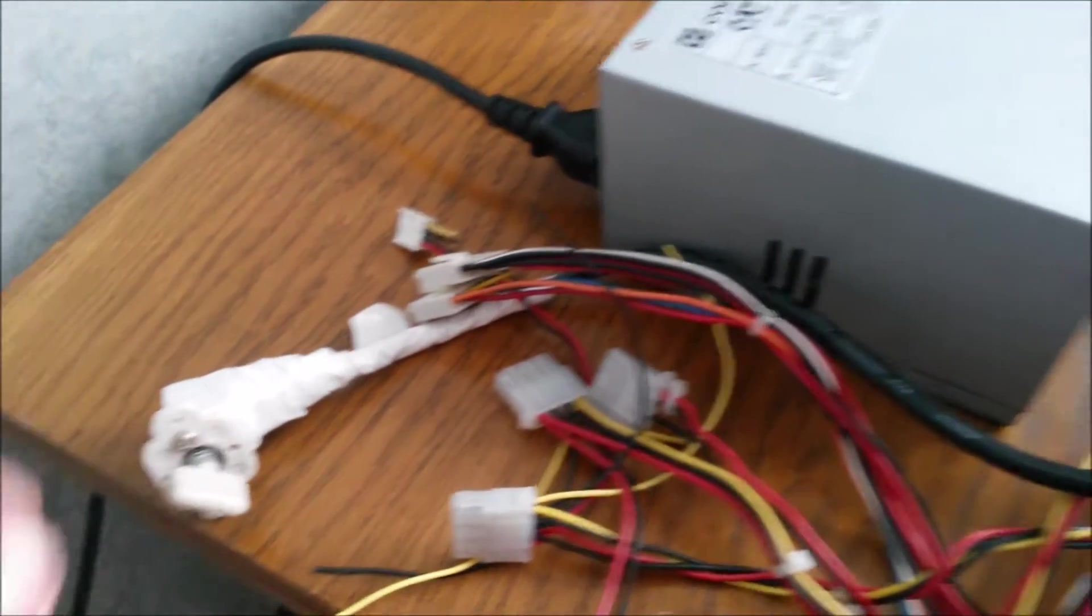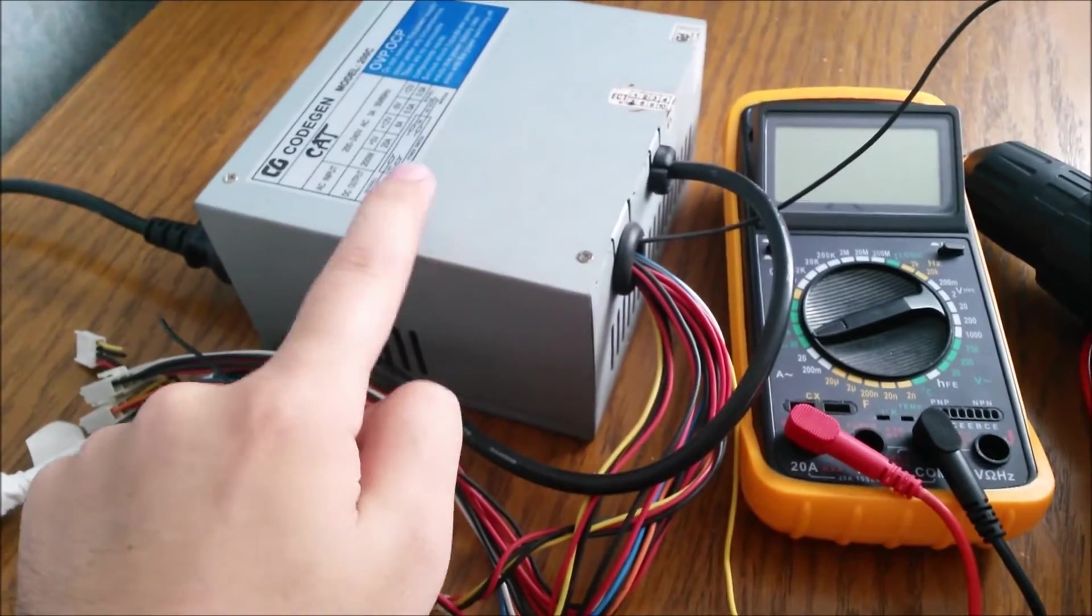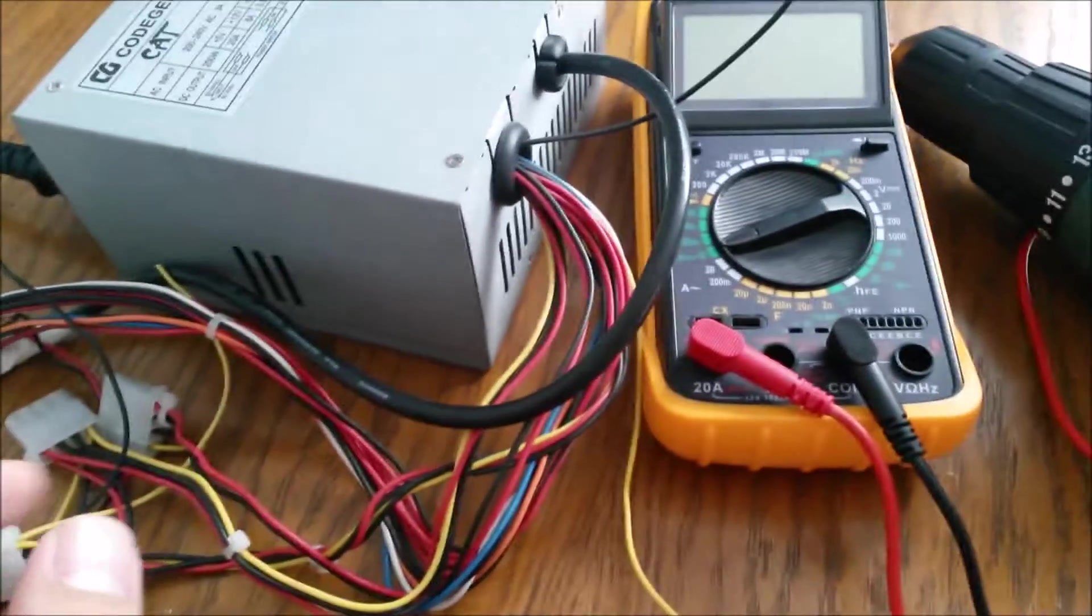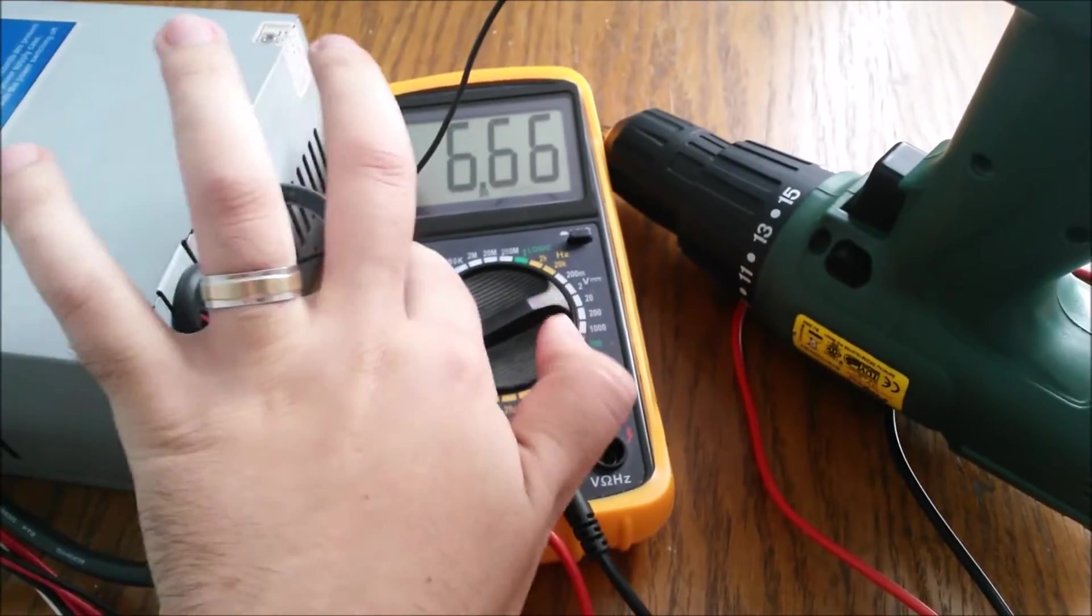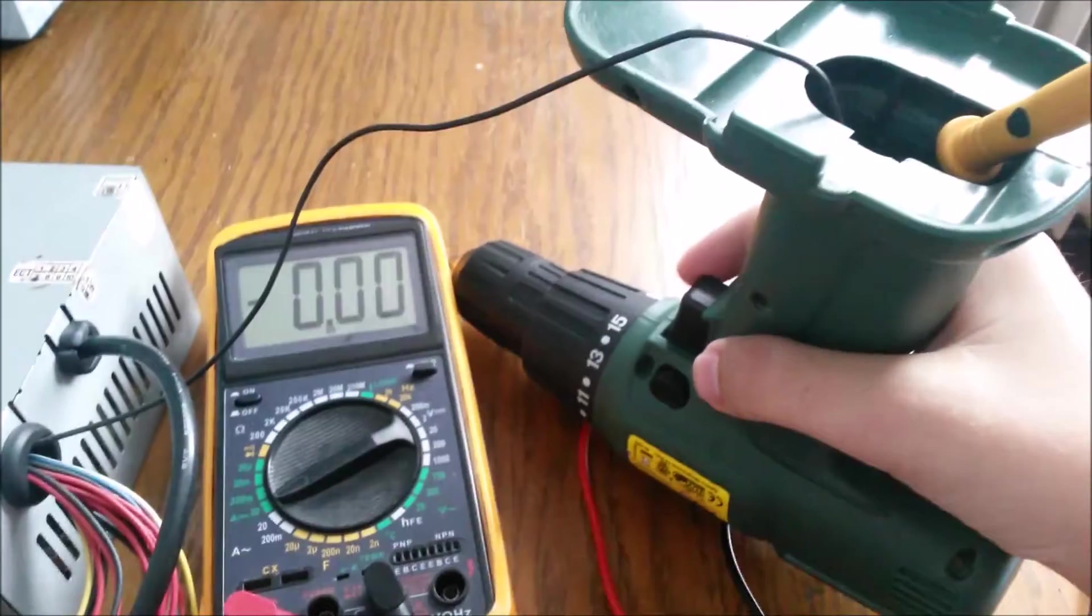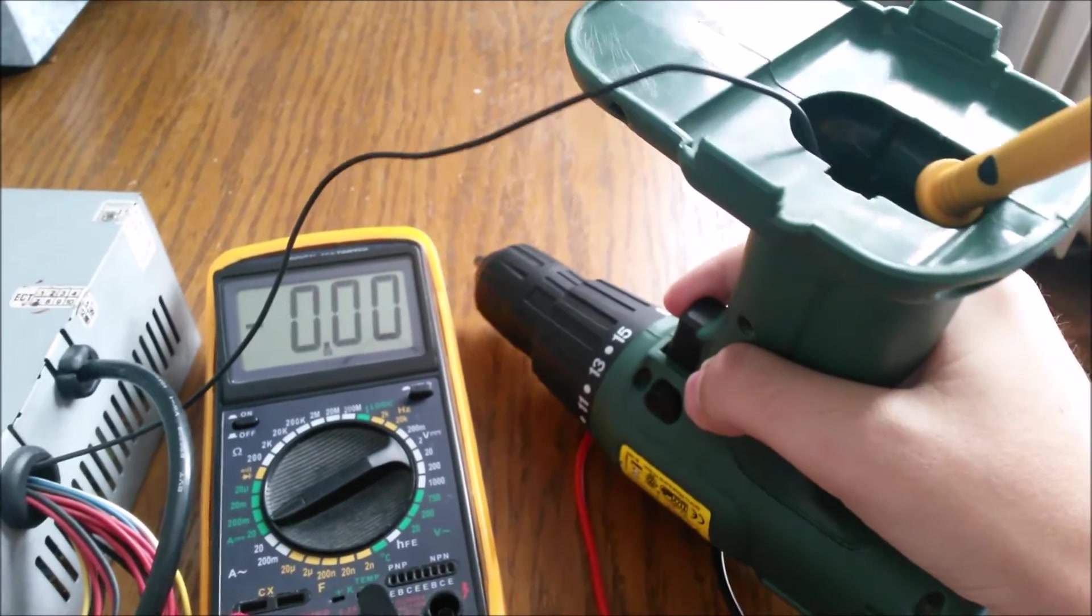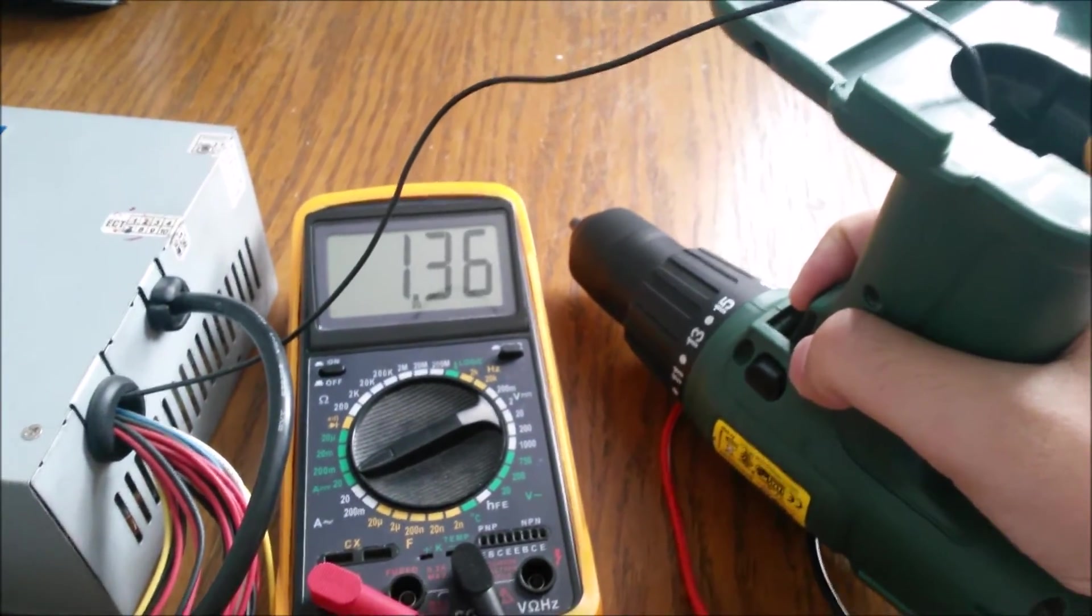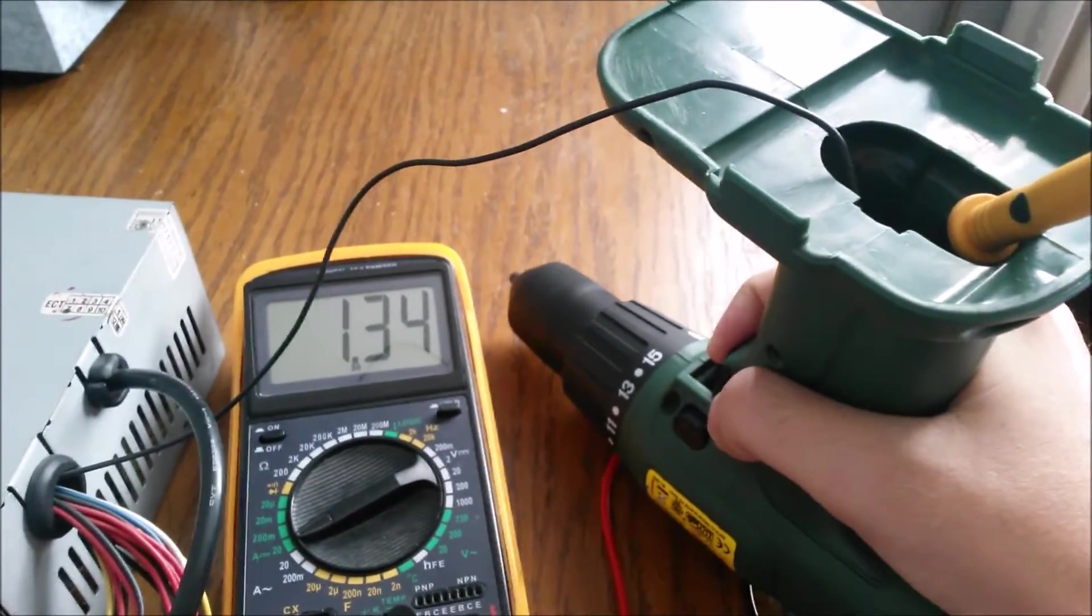So, powering on the supply. This is an AT power supply so it starts from this button, you don't have to connect green and black wires. Start the multimeter and see if we blow something up. Now, everything works fine.